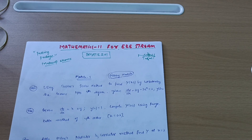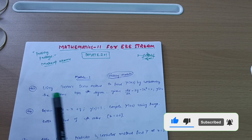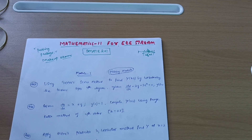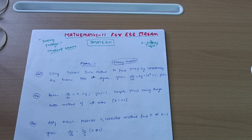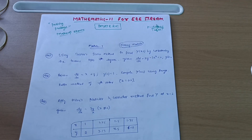Dear VTU EEE stream students, welcome back to another video. In the previous video we discussed the passing package for Mathematics 1 for triple stream. Today I will discuss Mathematics 2 for triple stream — subject code BMAT E201. There are three passing modules you should go through. It is possible to pass the mathematics subject by covering three modules only, but sometimes papers are unexpected, so first I will discuss three passing modules and later two additional modules.